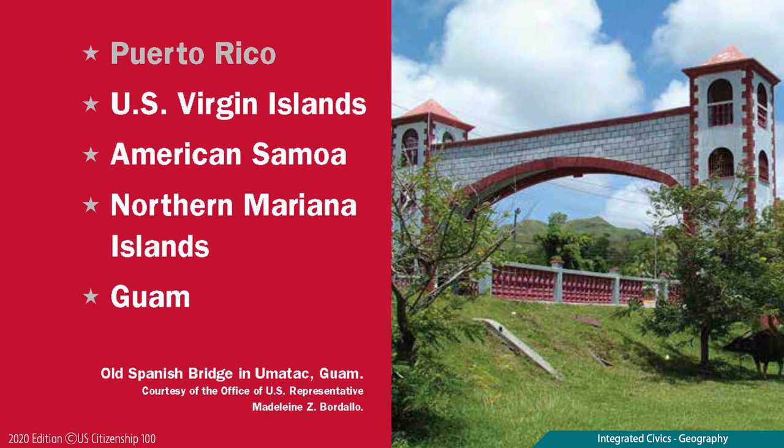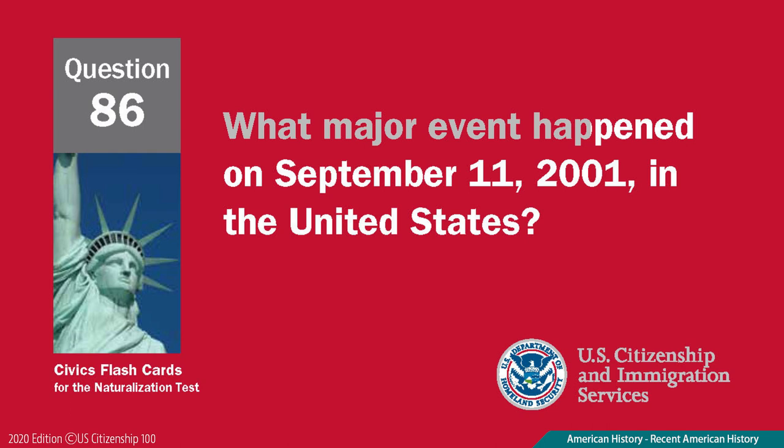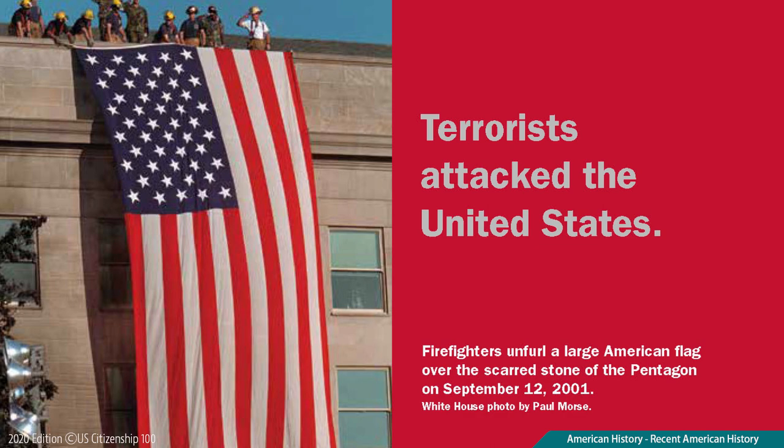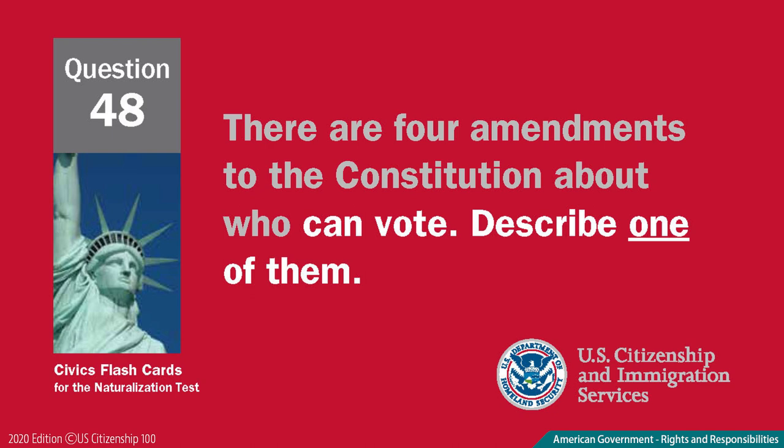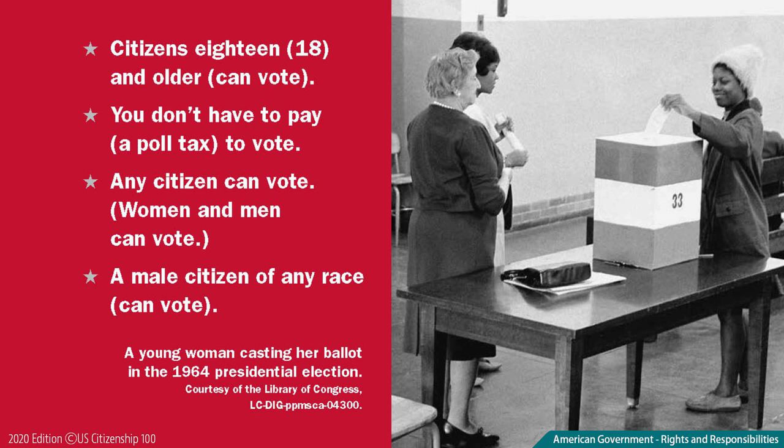What major event happened on September 11, 2001 in the United States? Terrorists attacked the United States. There are four amendments to the Constitution about who can vote. Describe one of them. Citizens 18 and older can vote.